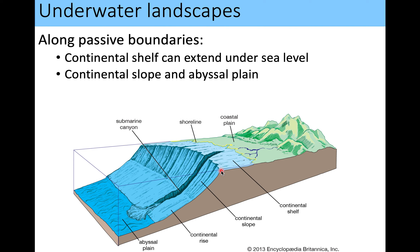After the continental slope comes the continental rise — the transition zone between continental and oceanic crust. The flat area where oceanic crust first meets continental crust is called the abyssal plain. In diagrams of this region you can see submarine canyons with underwater alluvial fans — the same process as on land, just underwater, like the submarine alluvial fan we learned about last week.